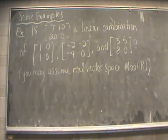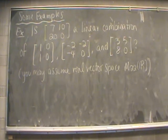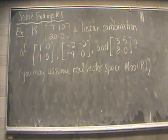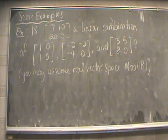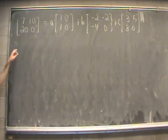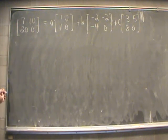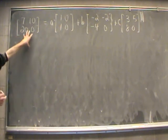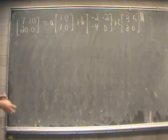The first example is determining whether a given 2×2 matrix is a linear combination of three other 2×2 matrices, working in the real vector space M22R. We will use determinants in these examples — links to the weave method and 4×4 cofactor expansion method are provided. To start, we assume the linear combination can be made, so we set the target matrix equal to a·(matrix1) + b·(matrix2) + c·(matrix3).